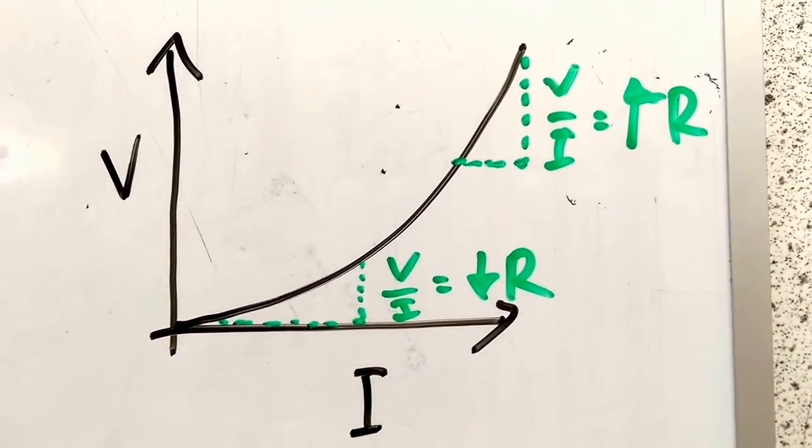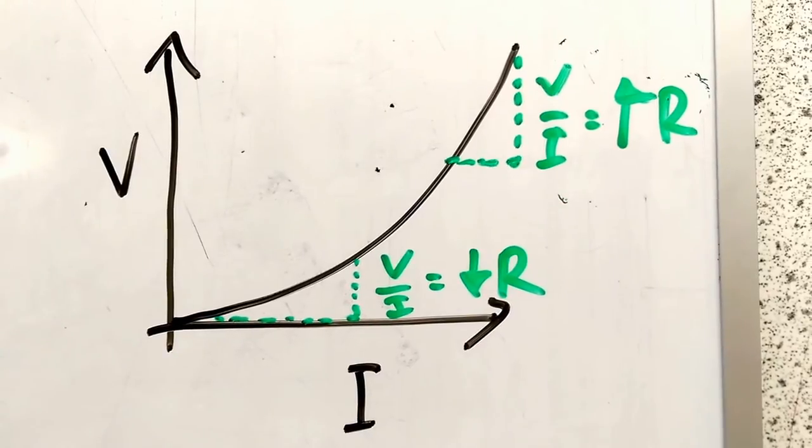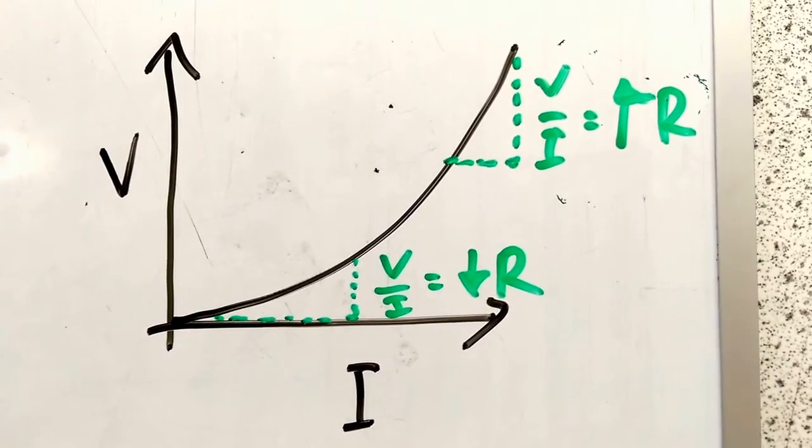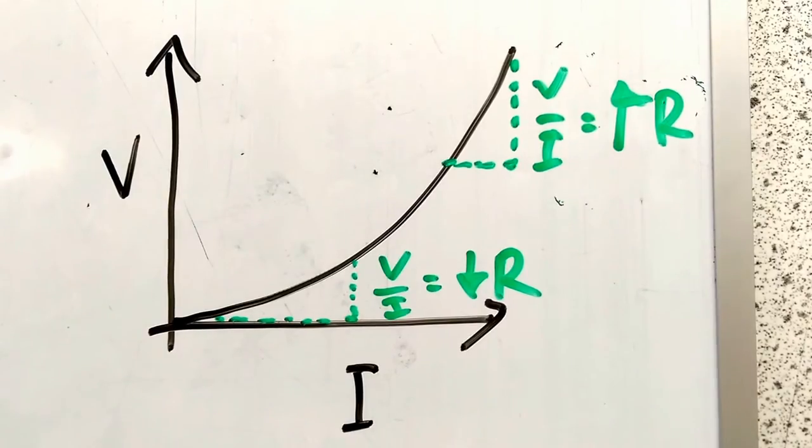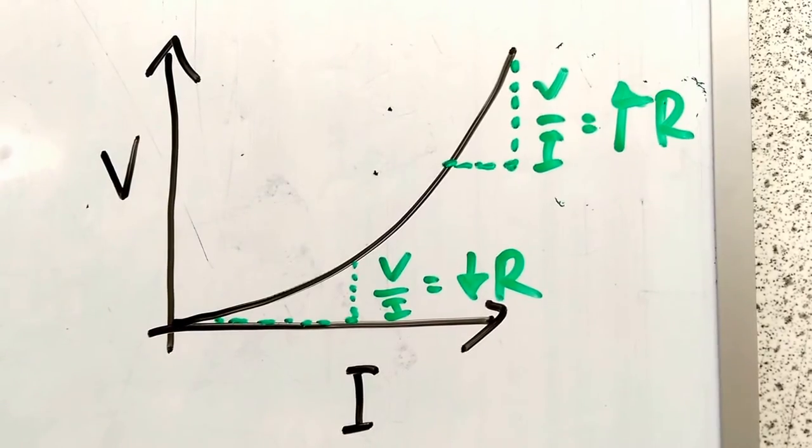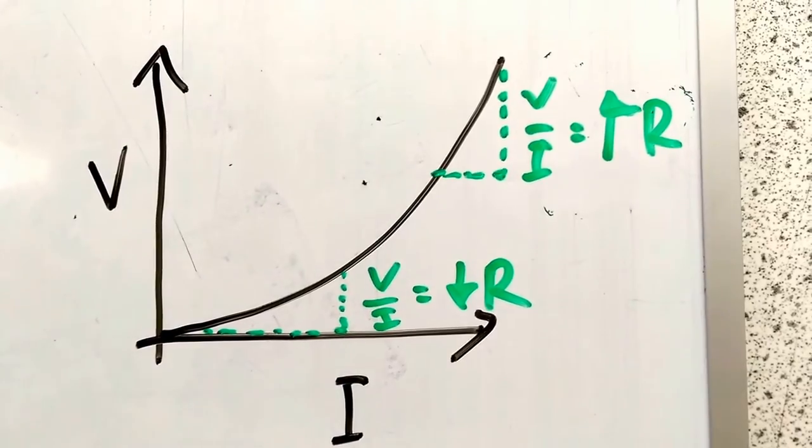Instead, we get a graph that looks a little bit like this, where the gradient is not a constant. It's not the same slope the whole way through. In fact, the gradient is larger at the top, so the resistance is larger later in the graph and less earlier on in the graph.